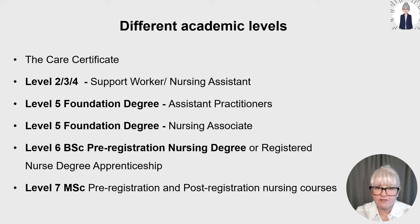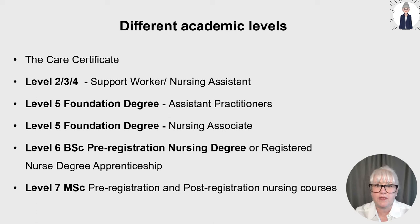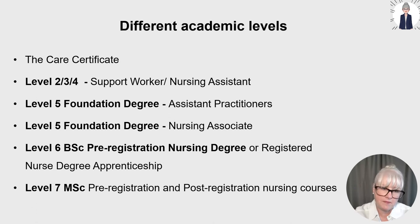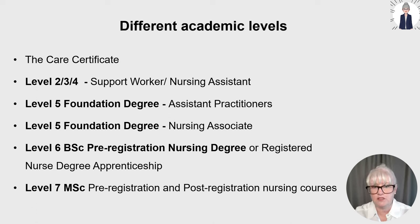At level six, there is a Bachelor of Science pre-registration nursing degree or a registered nurse degree apprenticeship. The difference between a nursing associate and a registered nurse is also linked to the academic level they must achieve. There are also level seven masters pre-registration and post-registration nursing courses, as some people come into nursing already with a degree, so some universities offer a level seven masters as well.